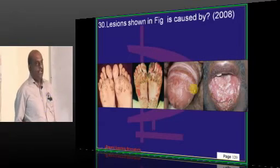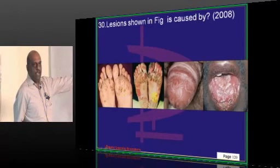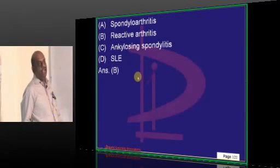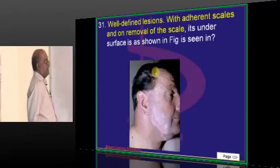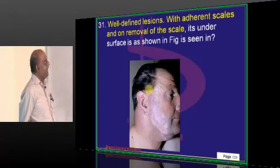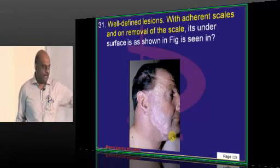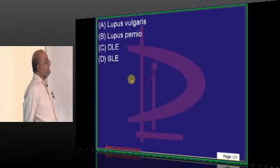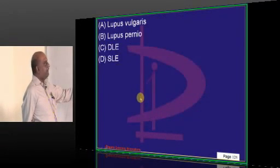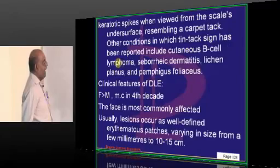These are called circinate balanitis on the glans, and keratoderma blennorrhagica lesions, which are features seen in reactive arthritis. There are adherent scales, and on removal of the scale its undersurface shows an appearance like a carpet — called the tin-tack sign or carpet-tack sign — and it is typically a feature of discoid lupus erythematosus.